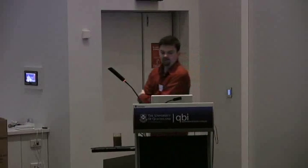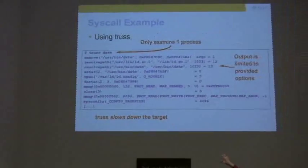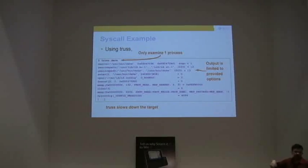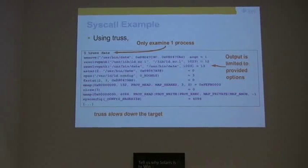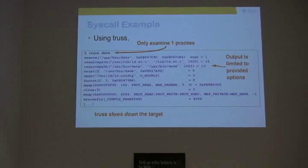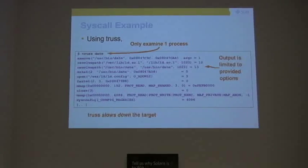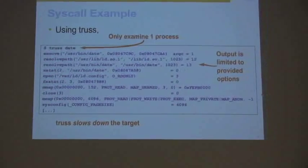As an example, just picture strace if you're not a truss person. Truss is a command that shows you all the syscalls. Truss date, and I can see execve, resolve path — it's going through the system calls as it runs date. Truss can only examine one process at a time. The output is limited to the provided options, so I don't have control over that — truss gives me what it wants. There are some switches. Truss also slows down the target a lot.